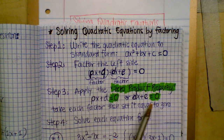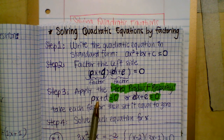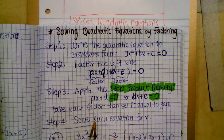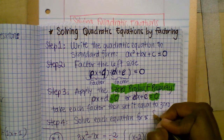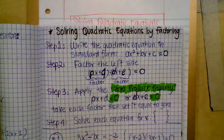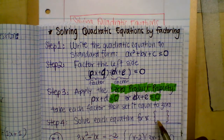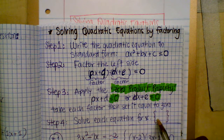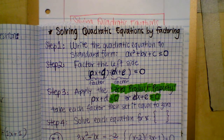Step three: apply the zero product property. Take each factor and set it equal to zero, so you can get x alone to find the x-intercept. To write the solutions, use two curly braces where you write the x values — the lowest x value on the left and the highest on the right.